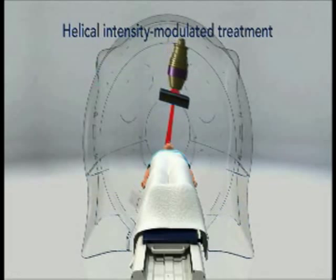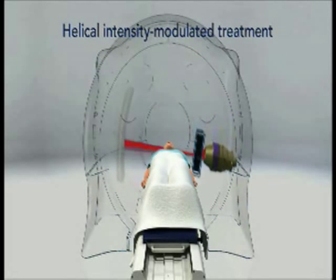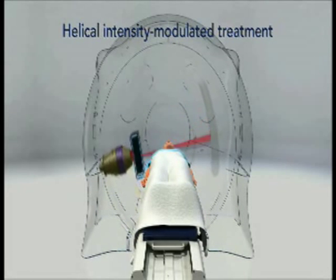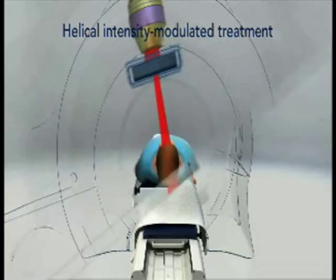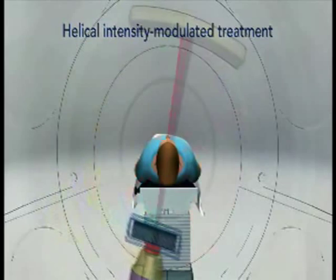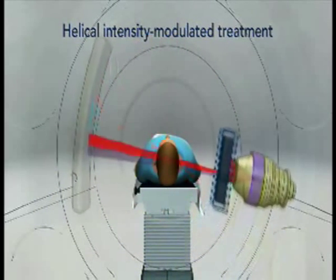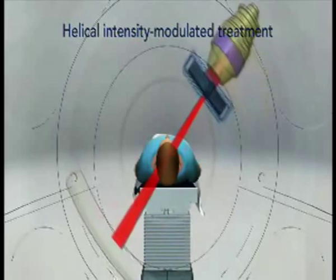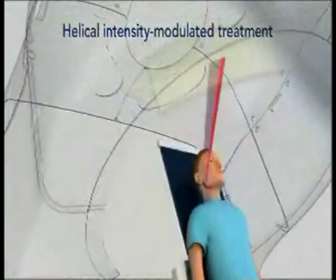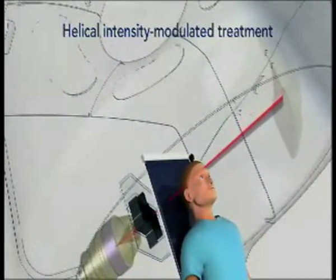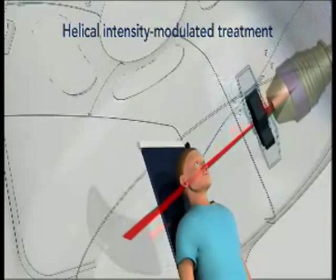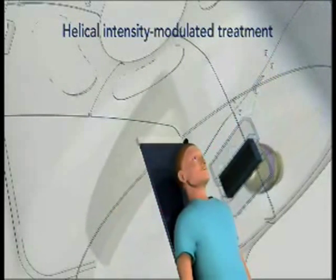For treatment delivery, the same helical rotations of the X-ray beam source are used. However, the intensity of the beam is changed rapidly during each rotation, according to the shape of the tumor, using thin tungsten leaves that block or unblock the beam. The 64 leaves in our unique binary multi-leaf collimator create tens of thousands of optimized 6 mm wide beam elements known as beamlets. This unique combination of a helically rotating beam source and beamlet-based delivery is what distinguishes TomoTherapy treatment from other forms of intensity modulated radiotherapy.